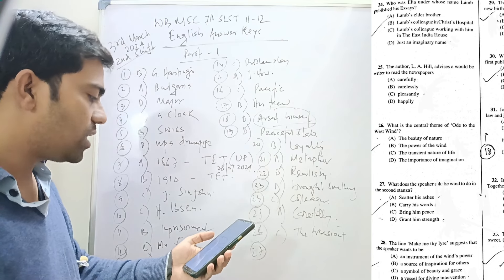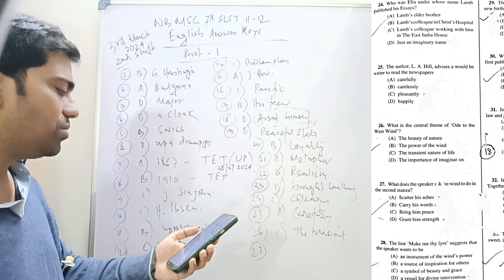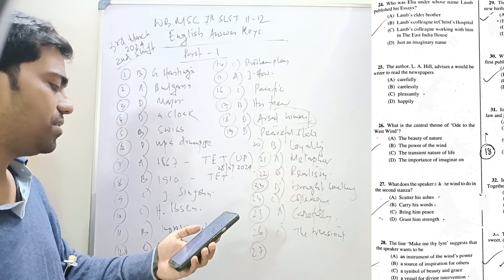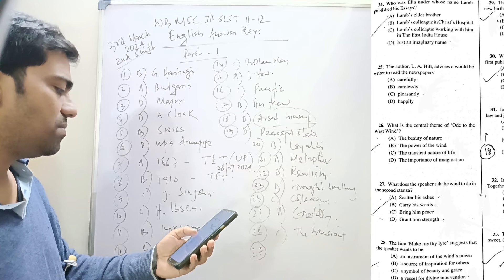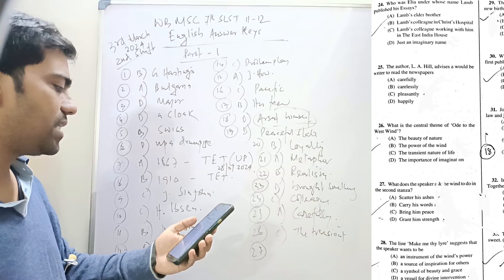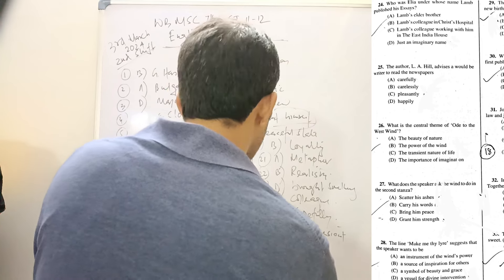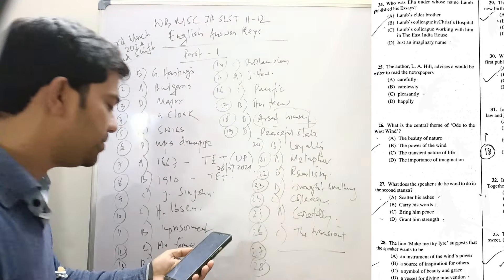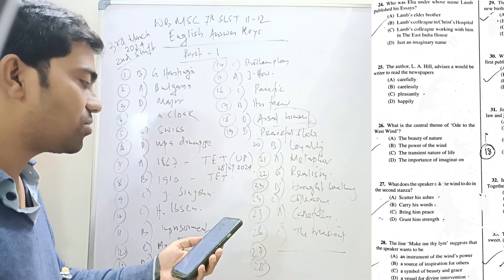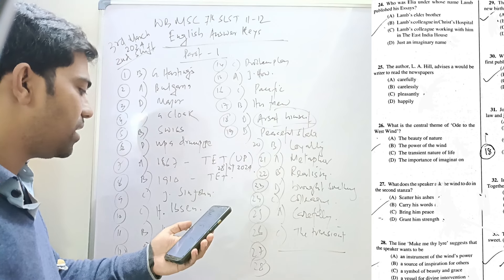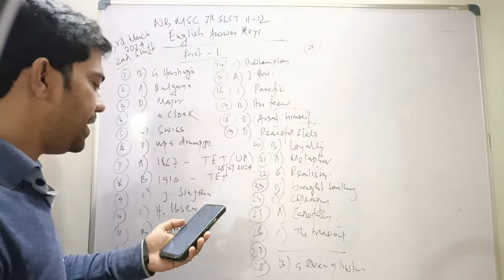Twenty-seven: What does the speaker ask the wind to do in the second stanza? The second stanza is about the wind's influences upon the sea. Scatter his ashes, carry his words, bring him peace, grant him strength - I don't know what would be the answer, I left it blank. The second stanza has not contained such elements. Twenty-eight: The line 'make me thy lyre' suggests that the speaker wants to be a source of inspiration for others, B.